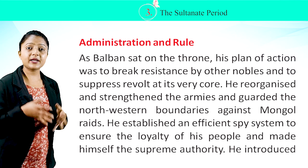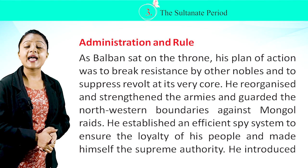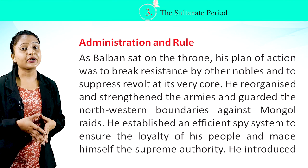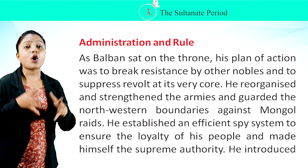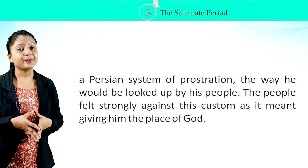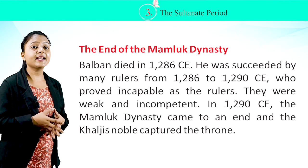As Balban sat on the throne, his plan was to break resistance by other nobles and suppress revolts at their very core. He reorganized and strengthened the armies and guarded the northwestern boundaries against Mongol raids. He established an efficient spy system to ensure the loyalty of his people and made himself the supreme authority. He introduced a Persian system of prostration that defined how he would be revered by his people. The people felt strongly against this custom as it meant giving him the place of God.